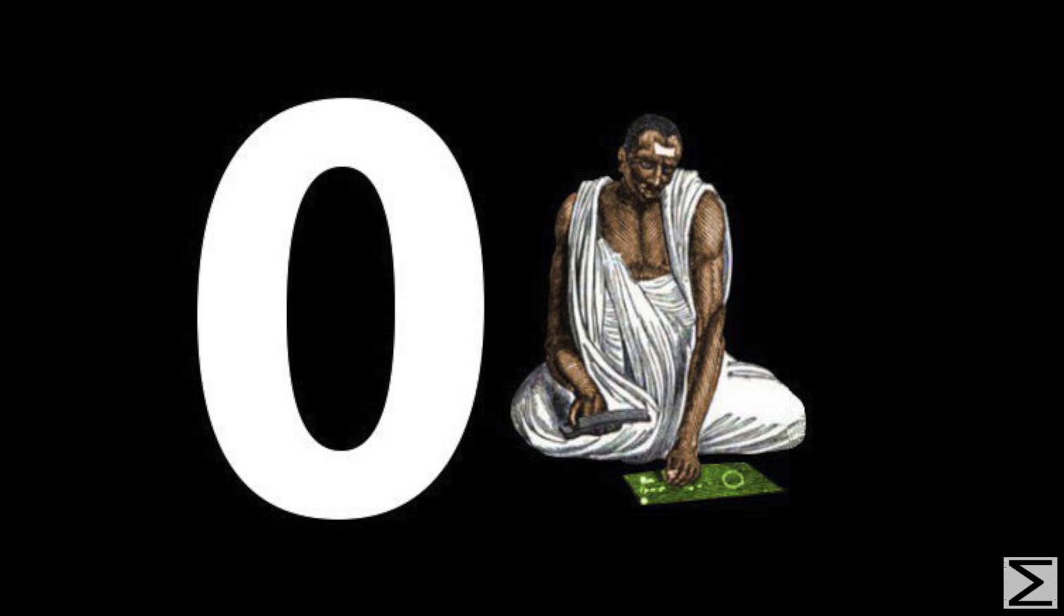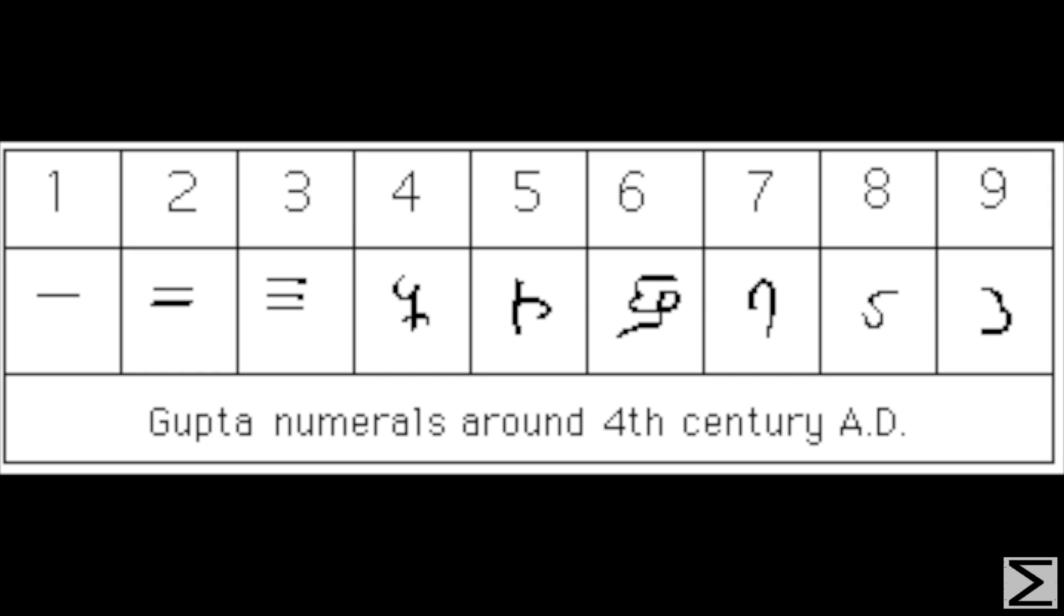His most notable contribution was perhaps his work with the concept of zero. Around the time that Brahma Gupta was born, the Indian numeral system was a base ten system. This meant that instead of having a unique symbol for each number, there were only symbols for the tens digits zero through nine. However, unlike other digits represented by numbers one through nine, zero wasn't treated like a number. Instead, it was only a placeholder.